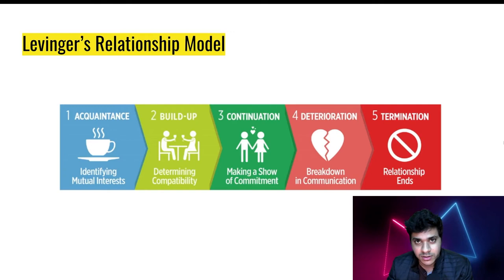Now let's get into Levinger's relationship model. Levinger described five stages to every relationship, and this is not just limited to communities — it's for all kinds of relationships.